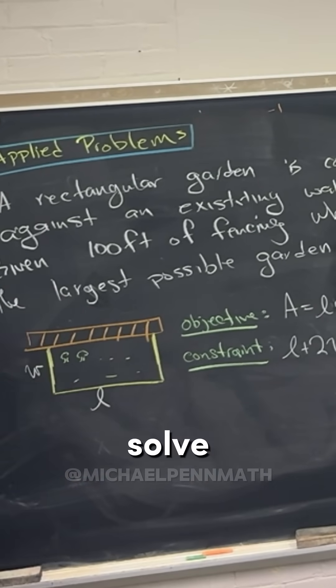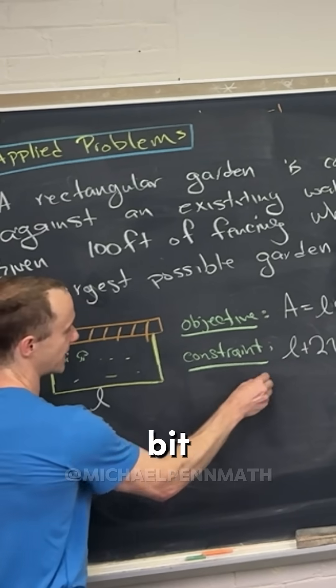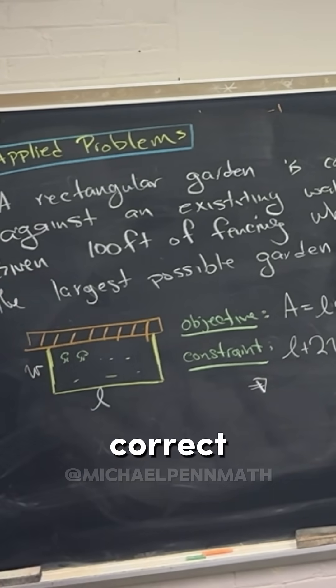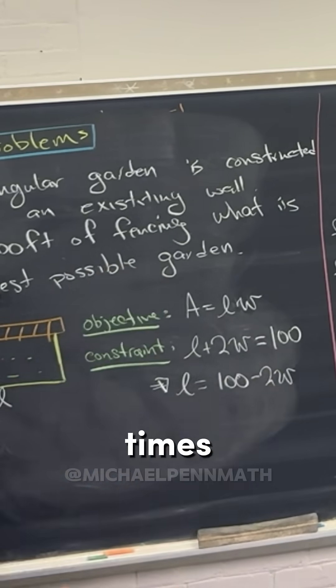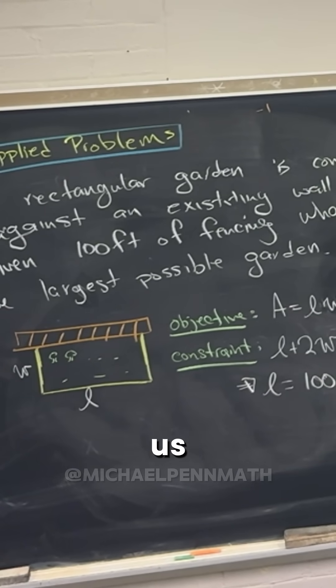So we might as well solve that for one of the variables. It looks a little bit easier to solve for L, correct? So we have L equals 100 minus 2W, and that brings us pretty quickly...